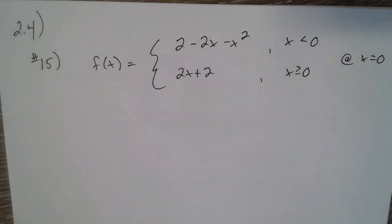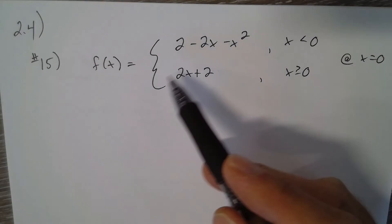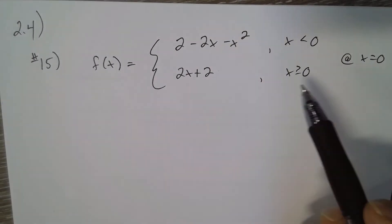Problem 2.4, number 15: Determine whether the curve has a tangent at the indicated point. If it does, give its slope. If not, explain why. We're trying to figure out if this piecewise function has a tangent at x equals zero.